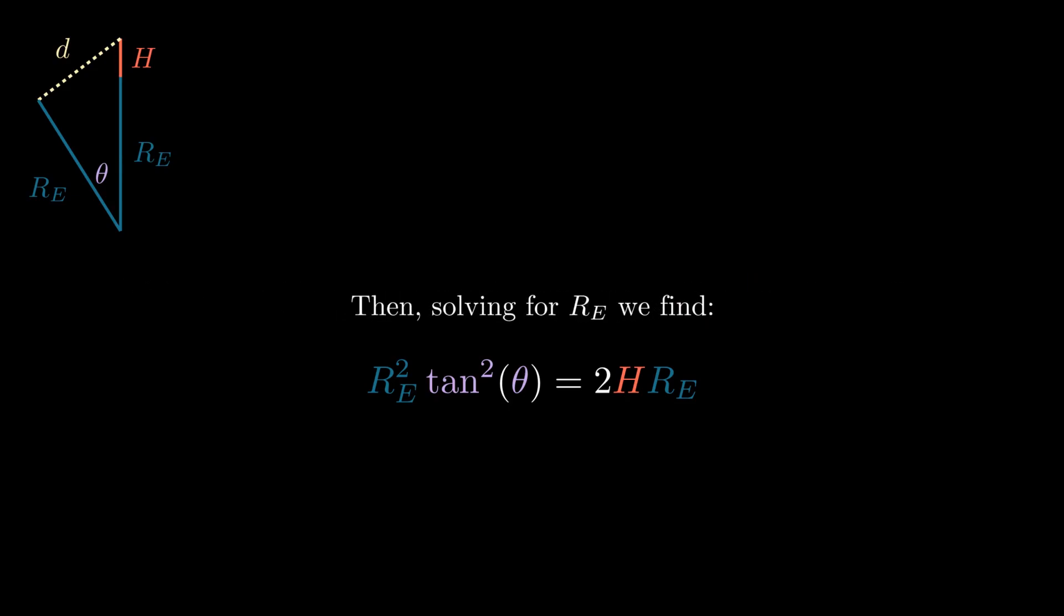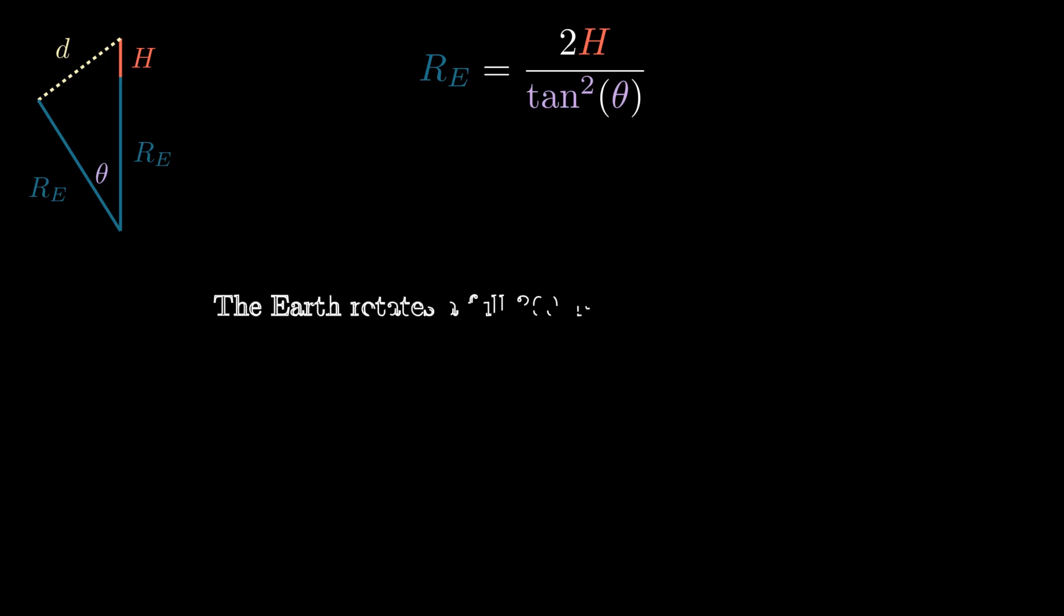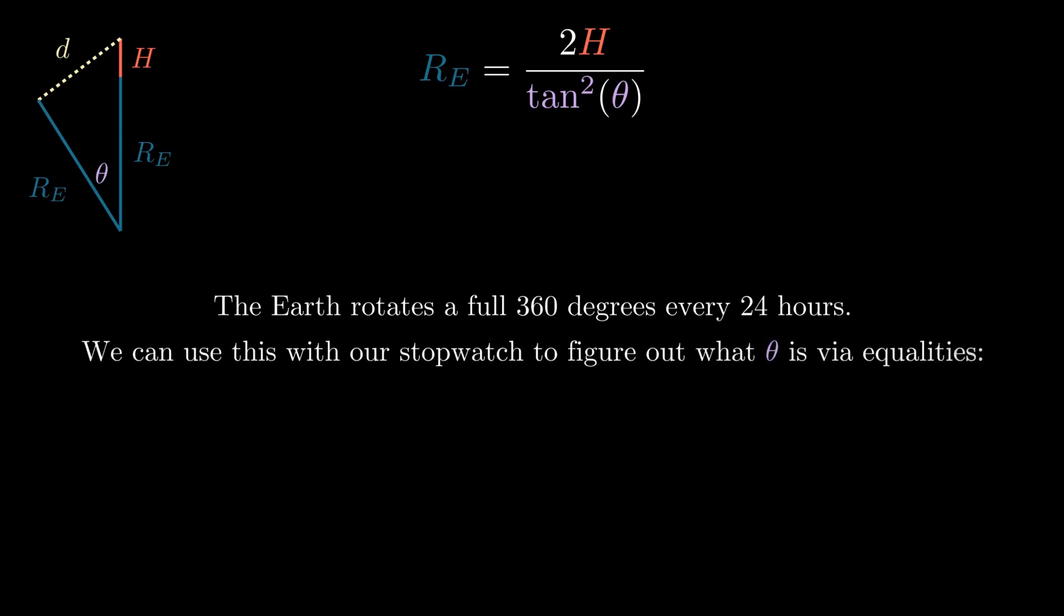Now we solve for RE, the radius of the earth that we want to find. The earth makes a full 360 degree rotation every day or once every 24 hours. We can use that information along with our stopwatch time to figure out what the angle theta is in our diagram using some equalities.